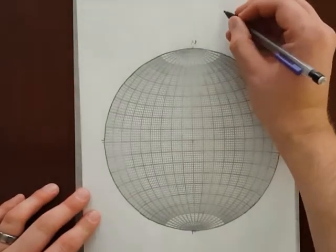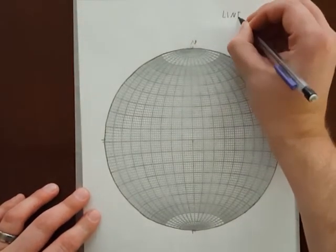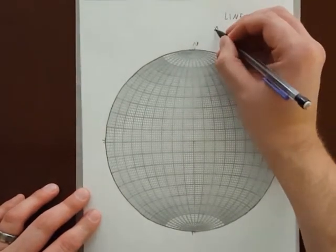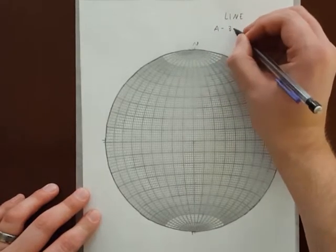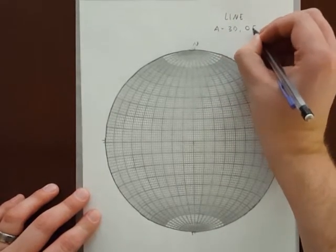All right, let's plot a line with a plunge of 30 and a trend of 50.